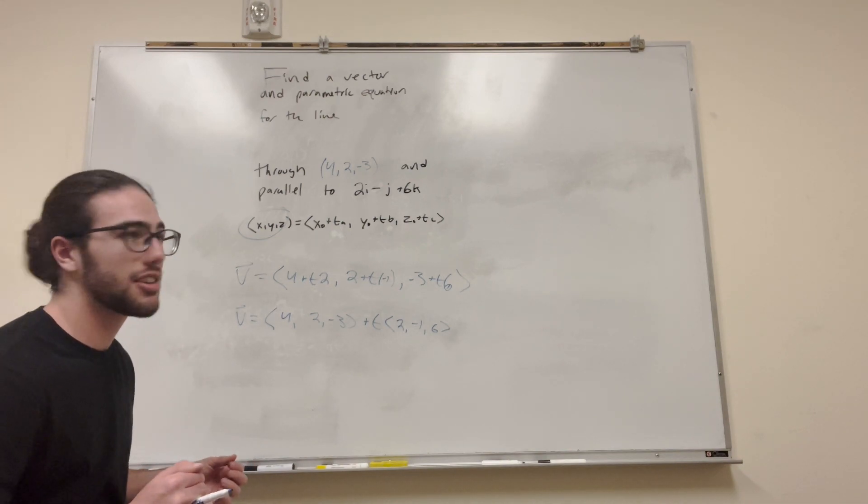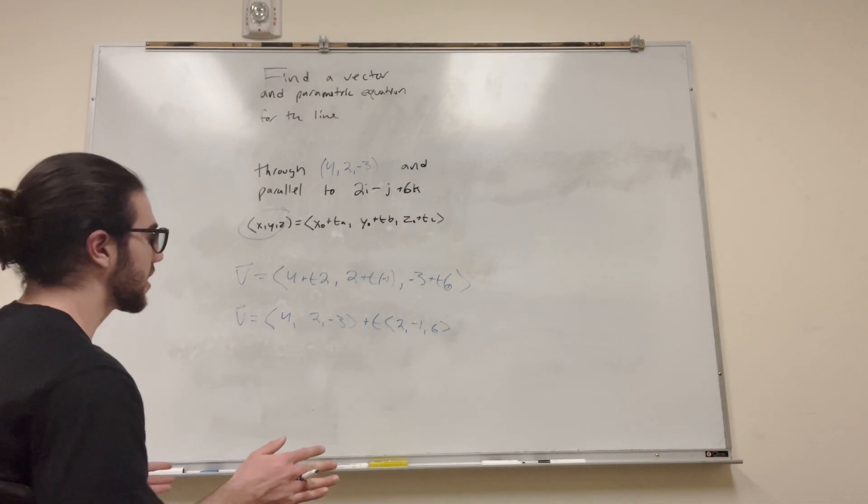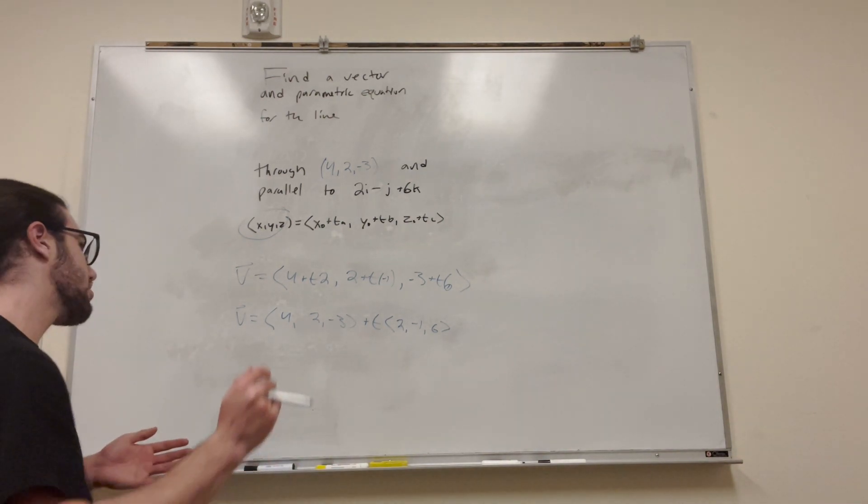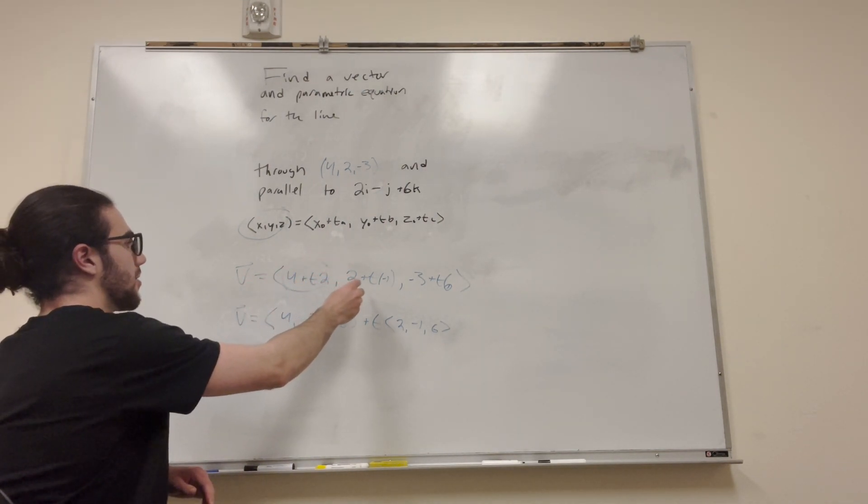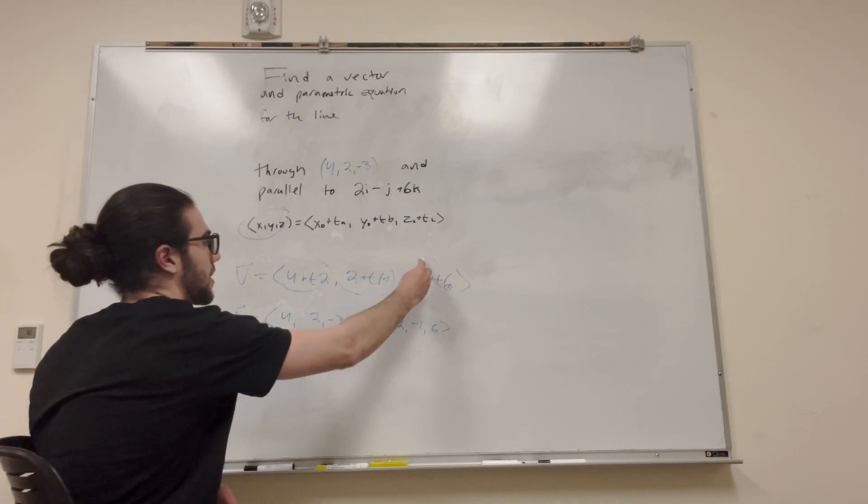So what we can do now is we can actually write our parametric form after this. So what does this original thing tell us? It says that X is equal to this, Y is equal to this, and Z is equal to this.